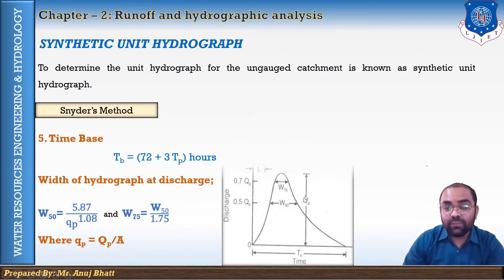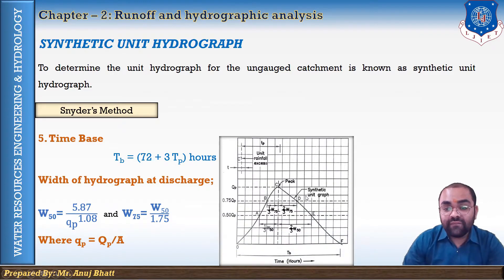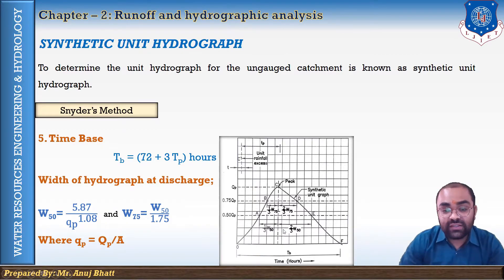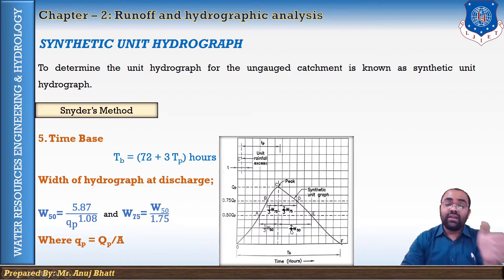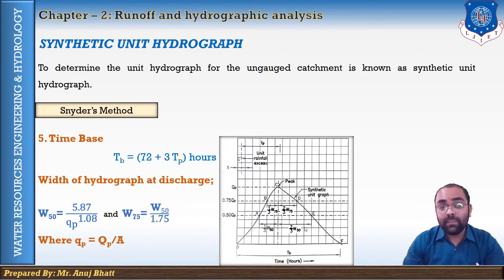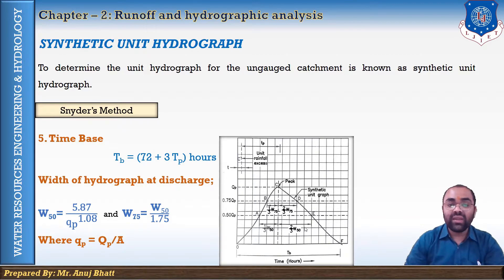With these width values, as shown in the graph at the 75 percent and 50 percent discharge levels, the width is divided as one-third on the left portion and two-thirds on the right portion of the peak. This is how Snyder's method is used to prepare the synthetic unit hydrograph.